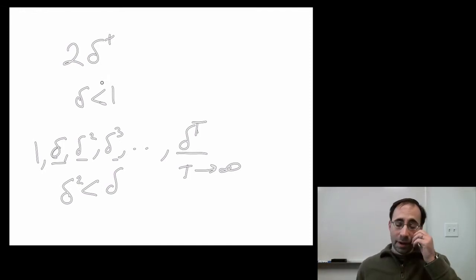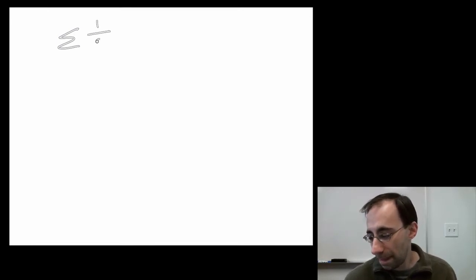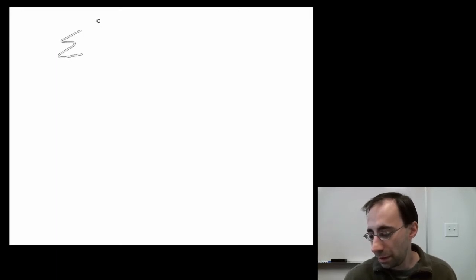So that's why we care about sequences. And there's other reasons as well. Let's move on now to series. A series is a sum of a sequence, basically. So we can write that same—let's start with a different series. This one's from the textbook. Let's make it 3 over 10 to the i. And that's i equals zero to infinity.